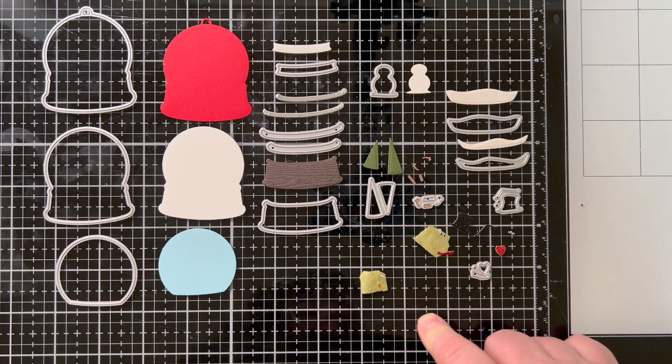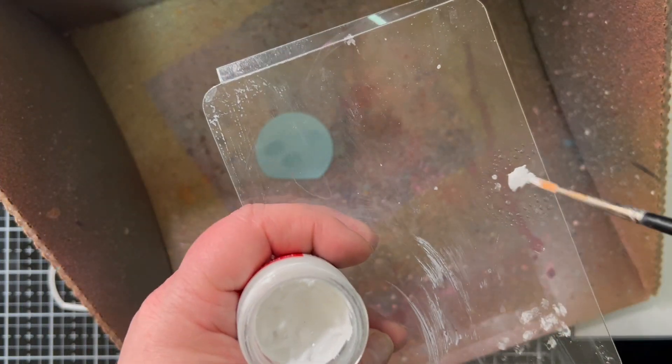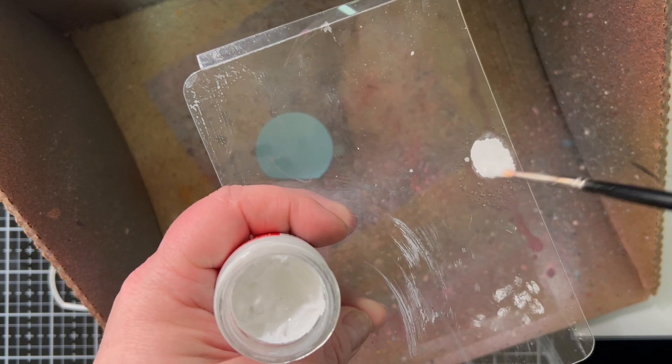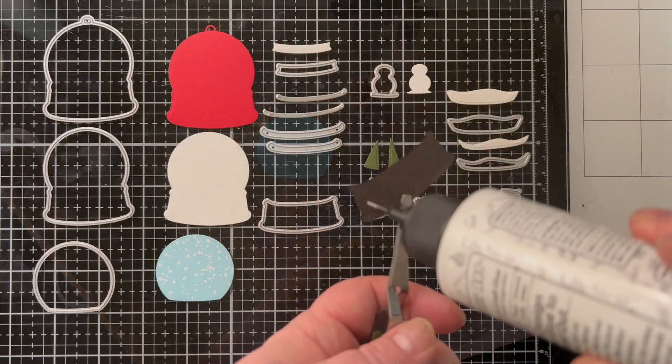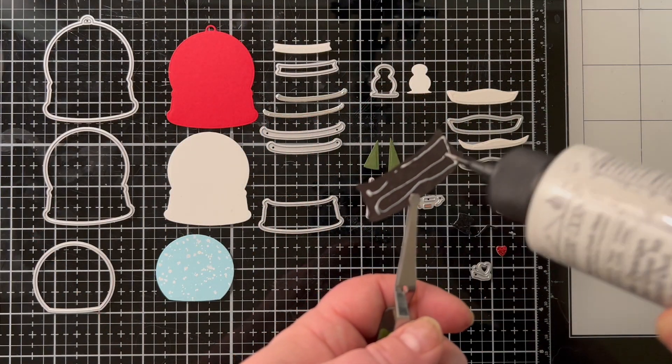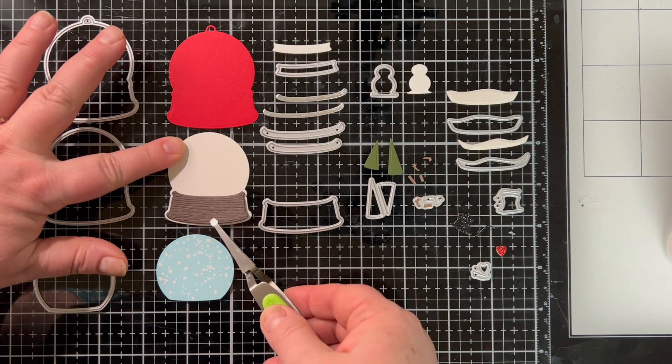I'm going to take the little blue piece that's like the background of the snow globe and some white acrylic paint, water that down a little bit and splatter it so it looks like snow. I wanted to do that first so I could let the glue dry.